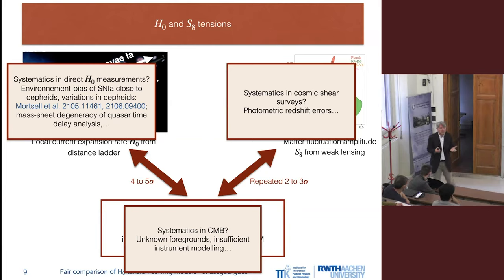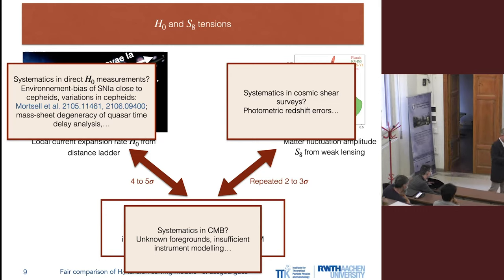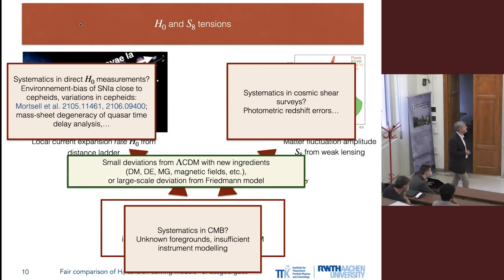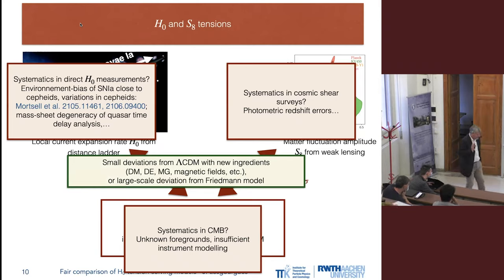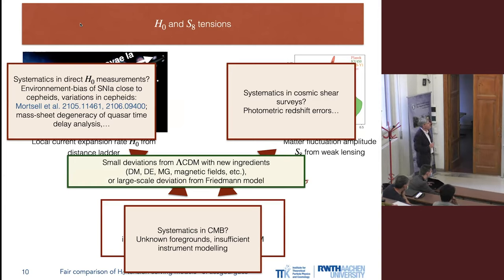If all collaborations have correctly accounted for their systematics, it's tempting to think we could explain this tension by adding new ingredients to Lambda CDM — non-standard properties of dark matter, dark energy, modified gravity, primordial magnetic fields, or maybe going back to the founding assumptions of the Friedmann–Lemaître model.